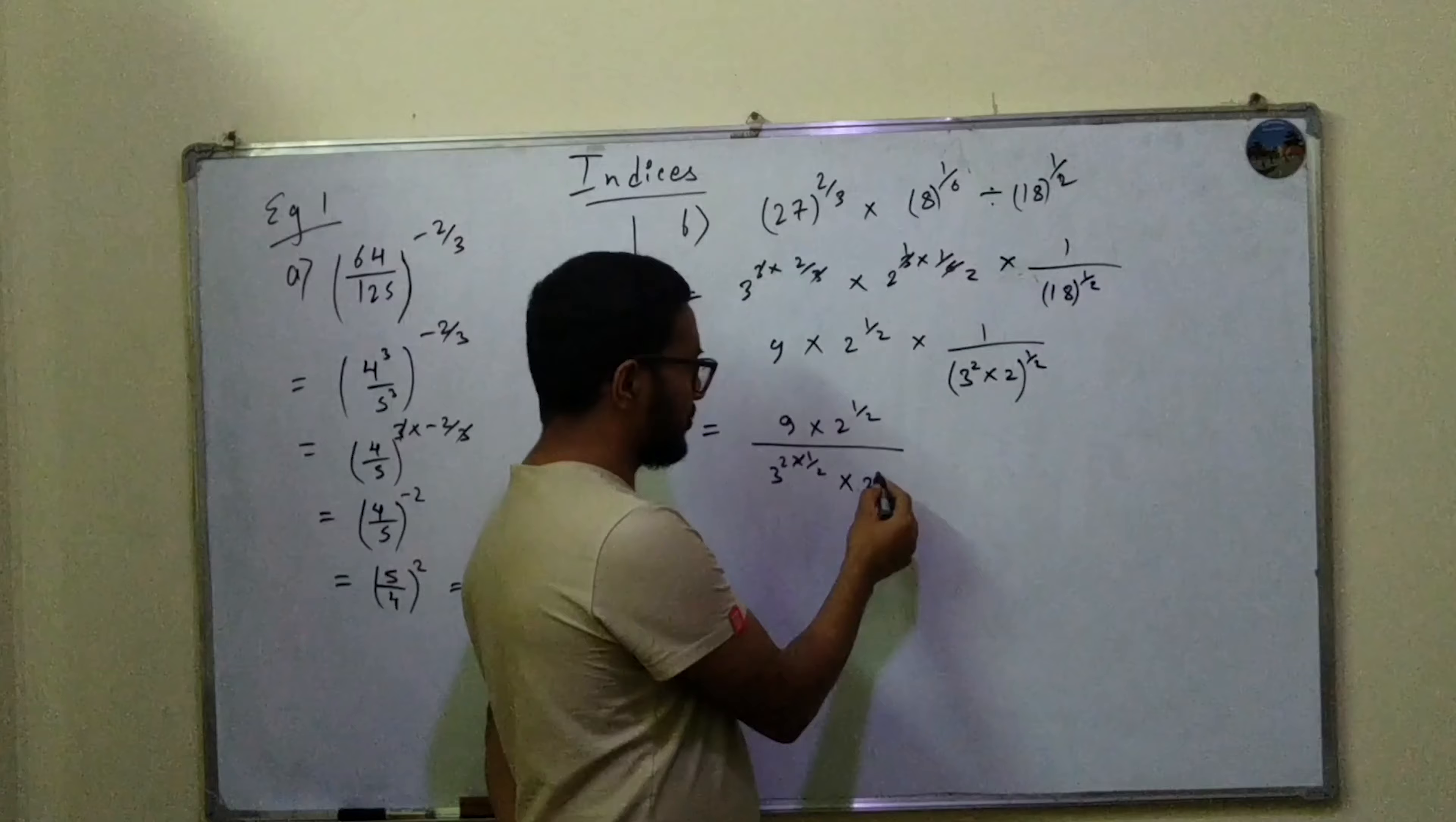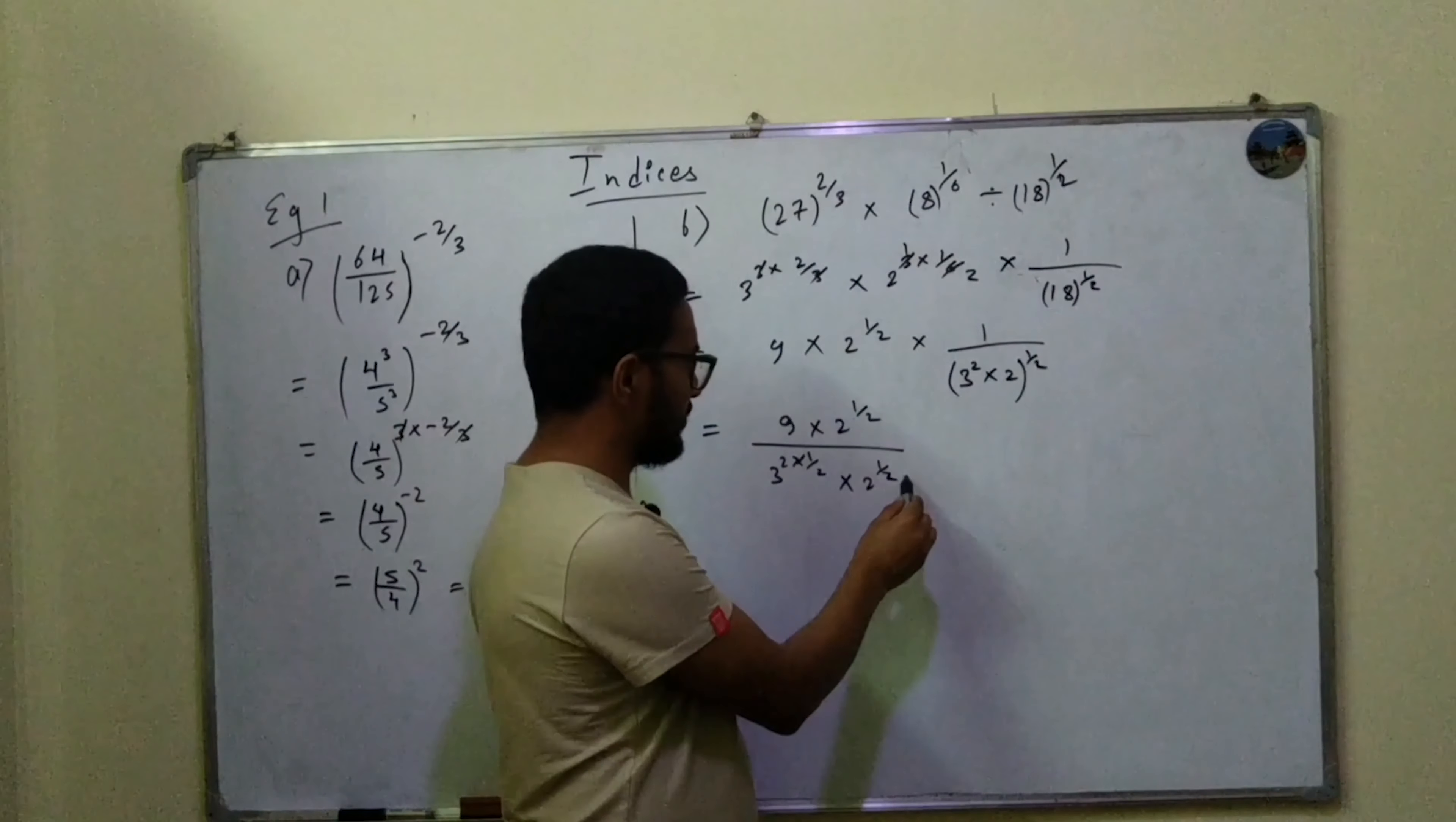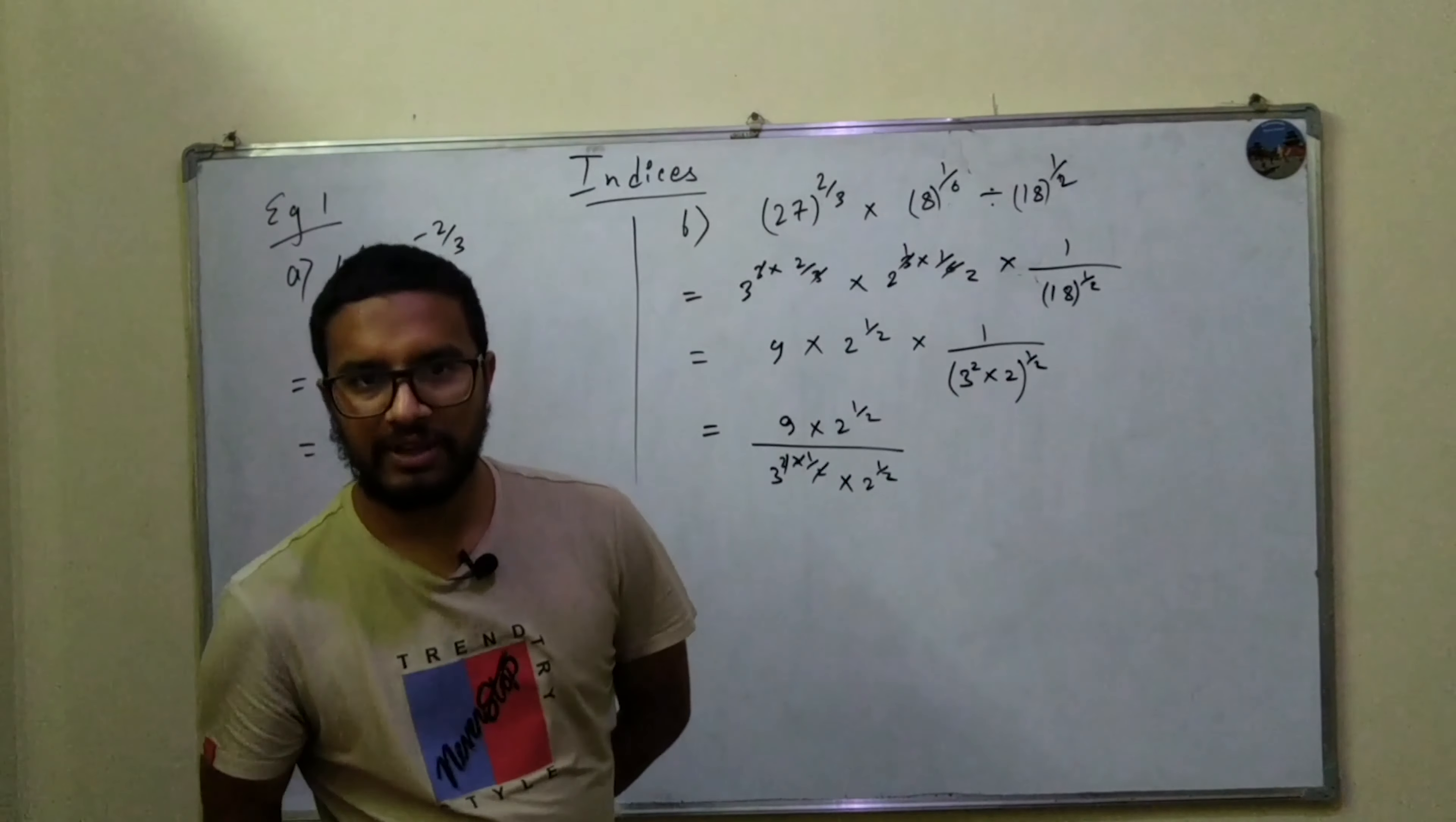Times 2^(1/2). 3 doesn't have any exponent, so the square and square will be cancelled out.